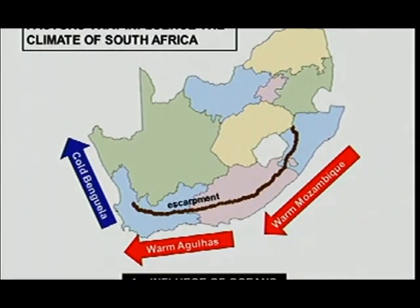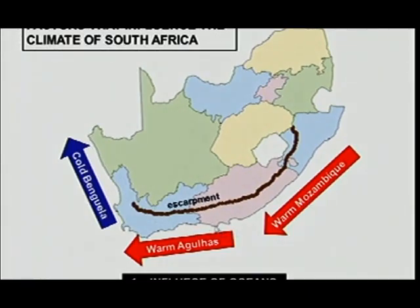First, you must know the influence of the oceans. You've learned from primary school level already, when you started working with atlases, that we've got the warm Mozambique and the cold Benguela. Here we've got the warm Mozambique, here we've got the cold Benguela, and here as we touch the Eastern Cape and start to move towards Western Cape, it is called the warm Agulhas. You must understand that you've got warm water here on the eastern side of South Africa and cold water here on the western side of South Africa, and these two have a huge influence on the climate of South Africa.